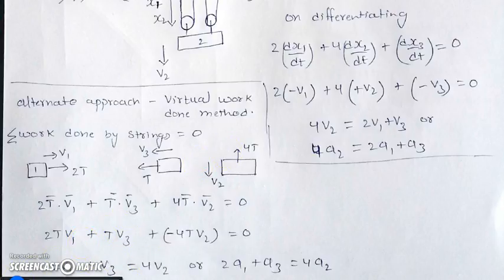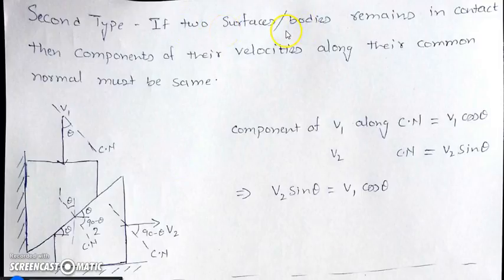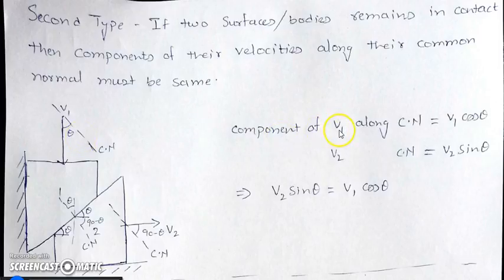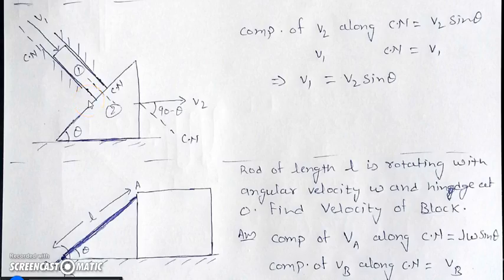The second type of constraint relation involves two bodies or surfaces remaining in contact. For them to stay in contact, the component of their velocities along the common normal must be equal. In this diagram, block 1 moves downward with velocity v1 and block 2 moves sideways with velocity v2. We draw the common normal and take components: the component of v1 along the common normal is v1 cos θ, and the component of v2 along the common normal is v2 sin θ. Setting them equal: v2 sin θ = v1 cos θ.